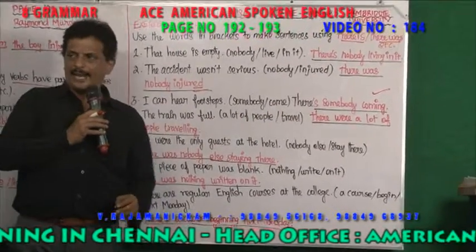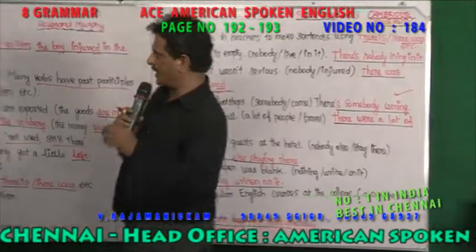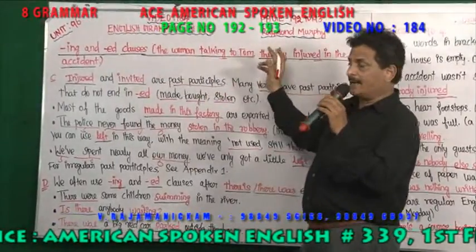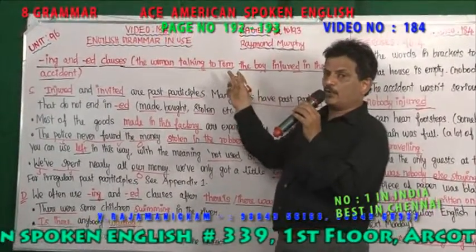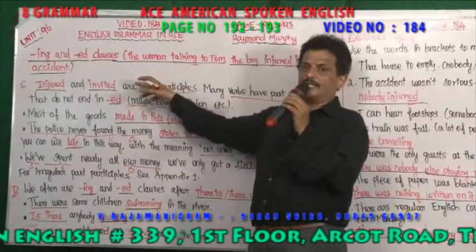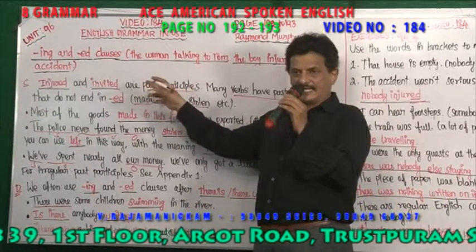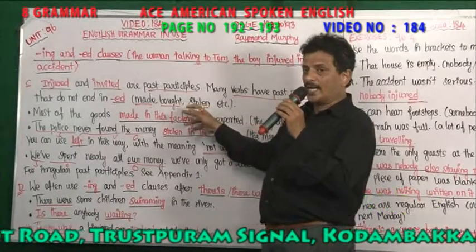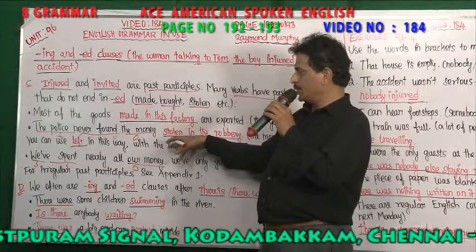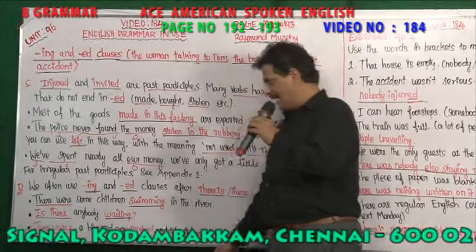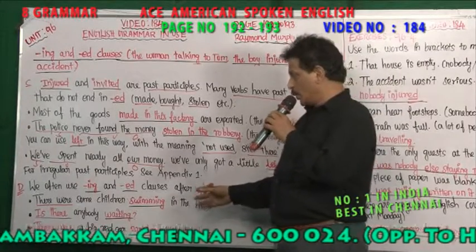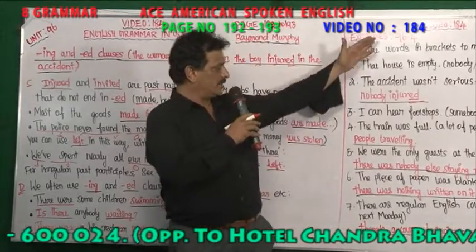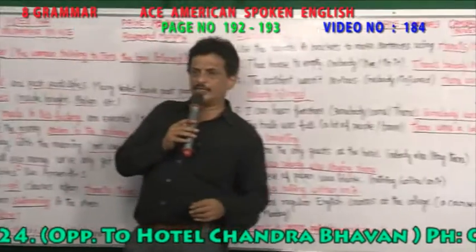ING and ED come as a relative clause. Suppose ED past participles are not there and irregular verbs come — like made, bought, and stolen. If these types of words come, we have seen how to use them. We have also seen 'left,' and ING and ED used with 'there is,' 'there was,' 'there are,' 'there were.' That's what it's all about. Hope you are able to get it.